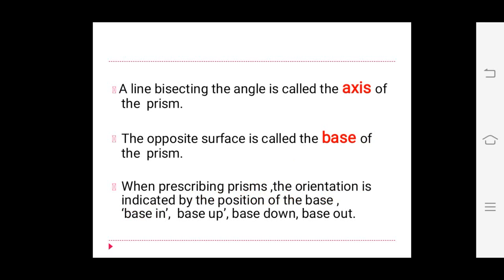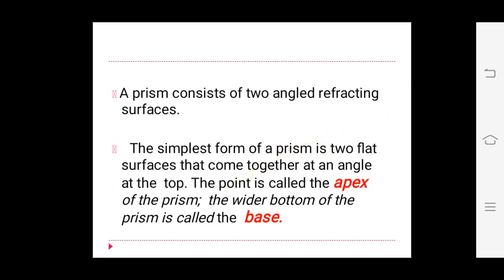A line bisecting the angle is called the axis of the prism, and the opposite surface is called the base of the prism. When prescribing a prism, the orientation is indicated by the position of the base — which may be inside, outside, upward, or downward. The four positions are called base in, base up, base down, and base out.